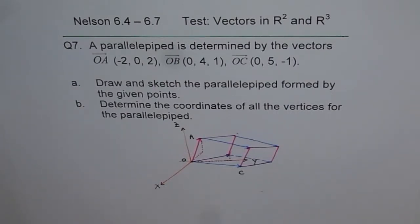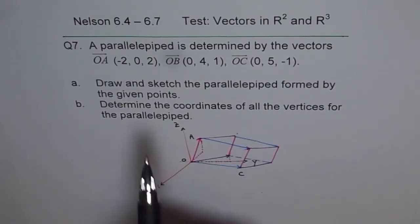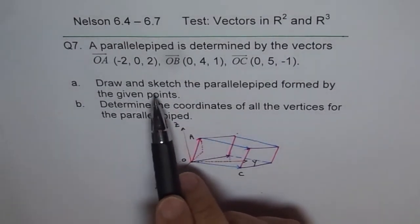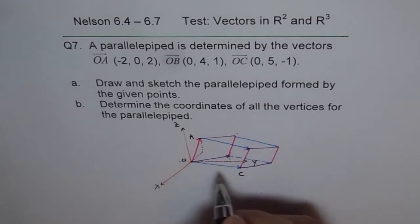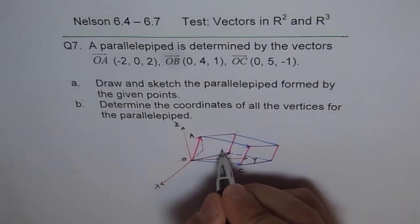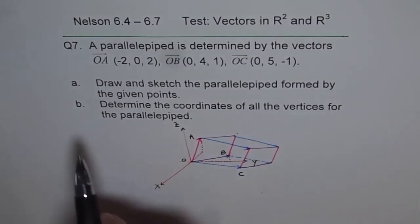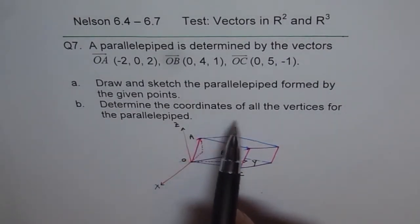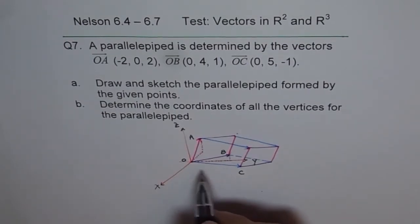Now we can label it. We've done the first part, that is draw and sketch the parallelepiped formed by the given points. The points are A and this is point B for us. These points are already given to us. Now, part B is determine the coordinates of all the vertices for the parallelepiped. To find all the vertices, we have to just add the coordinates.